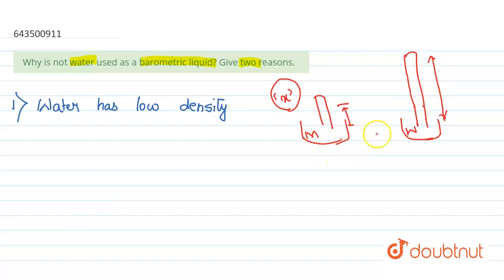So sometimes it is practically impossible to create such huge barometers. So that's why mercury, or we can say that a liquid with more density, is used for barometer or as a barometric liquid. So that is the first reason.